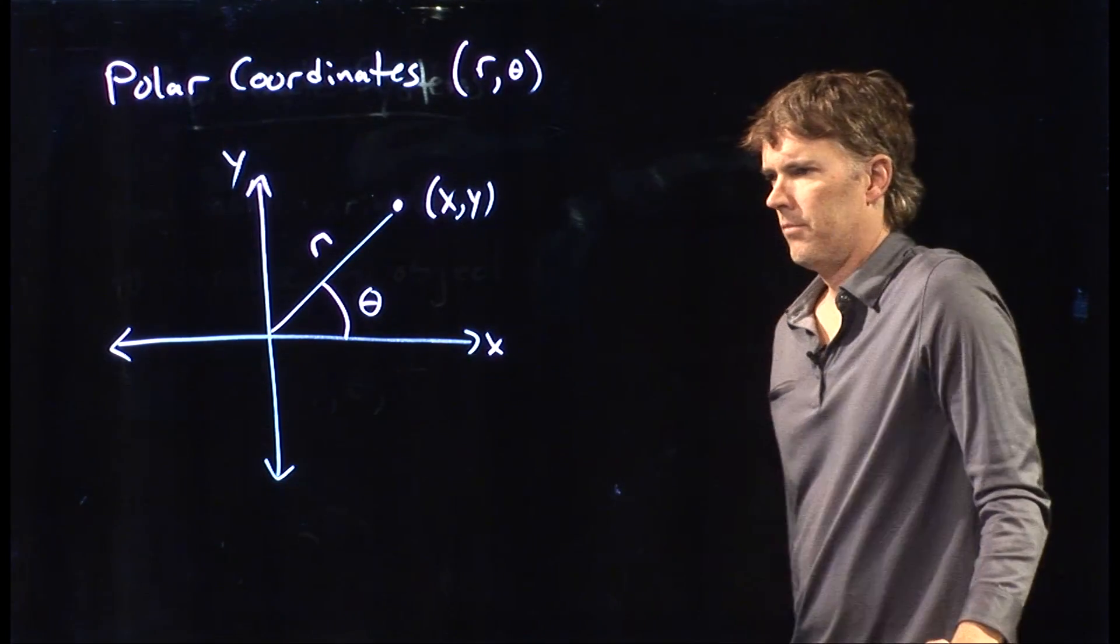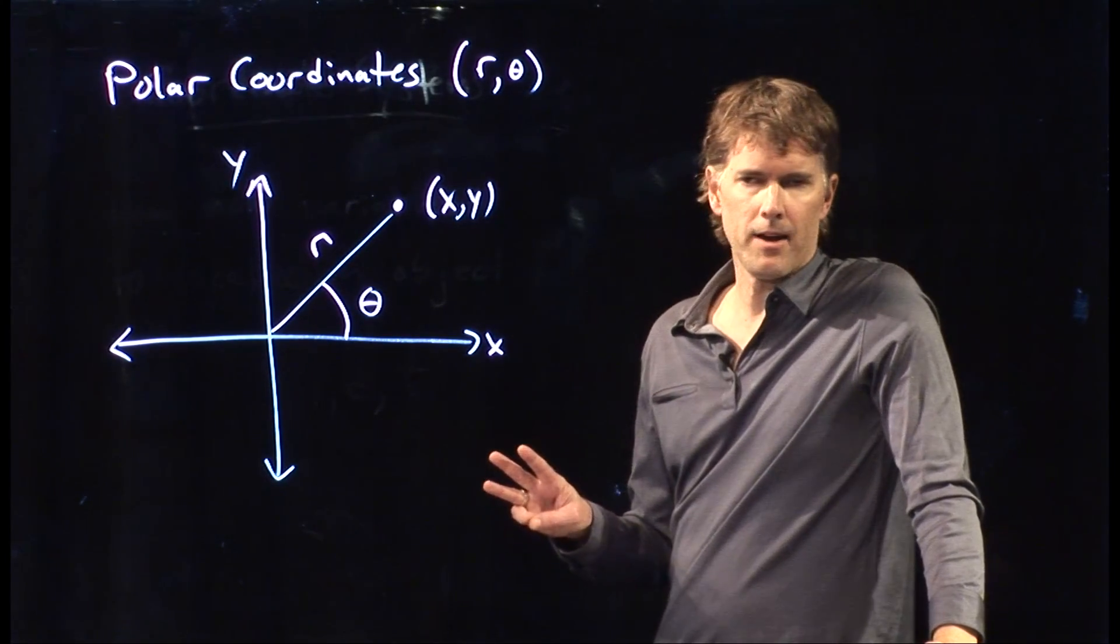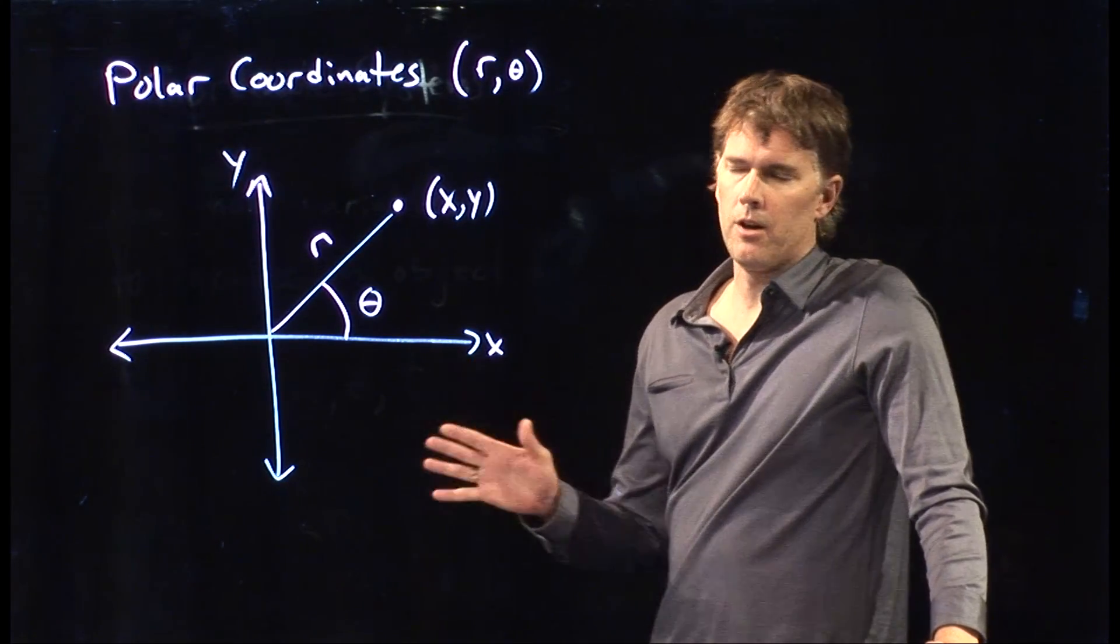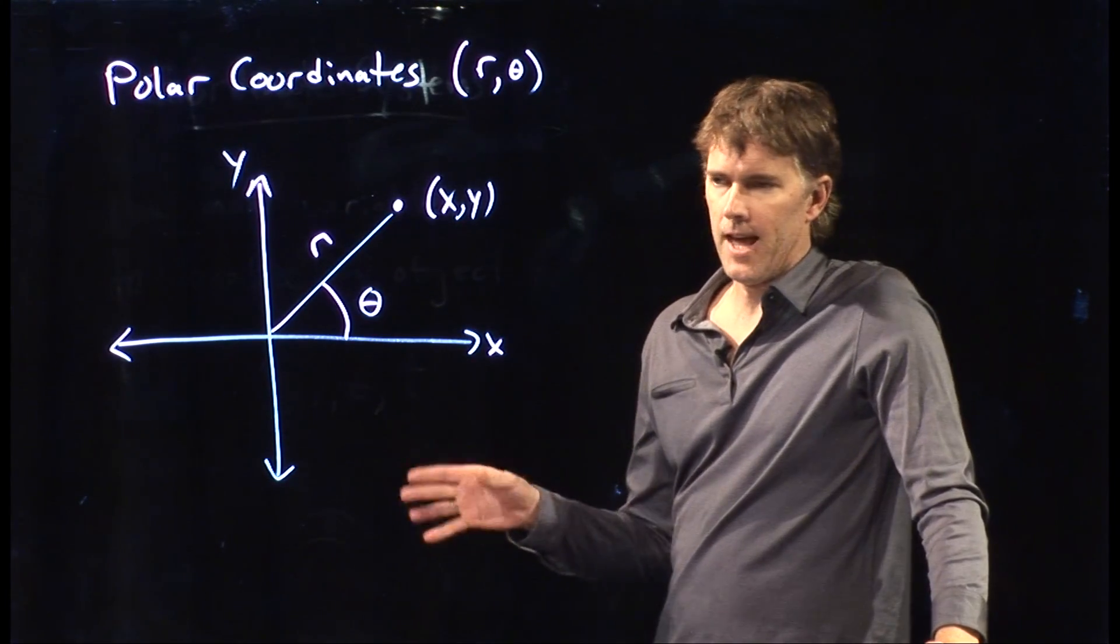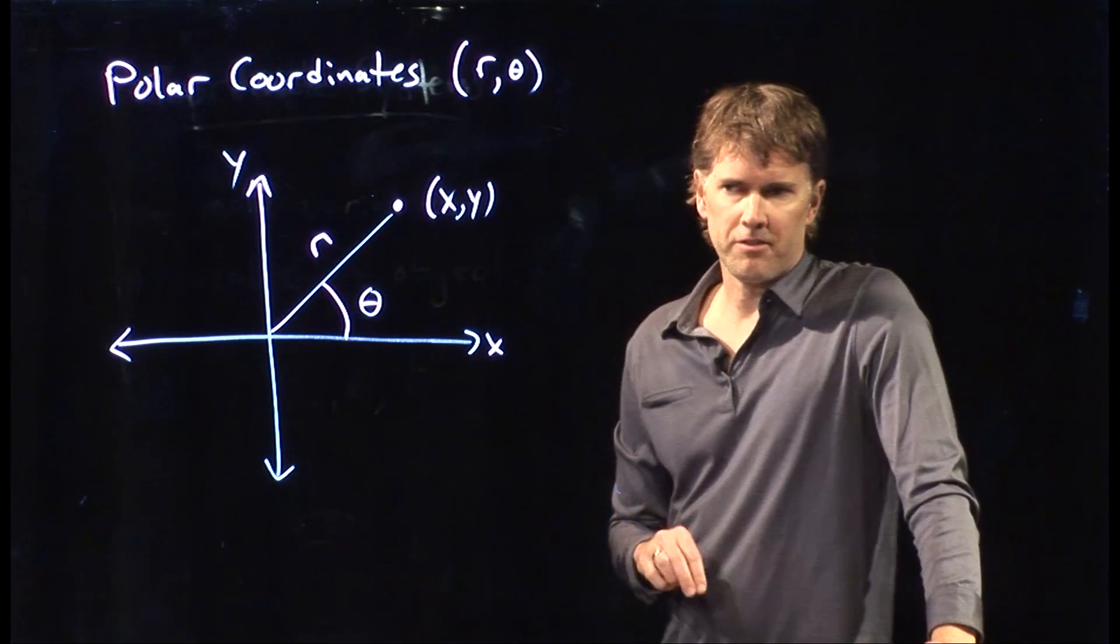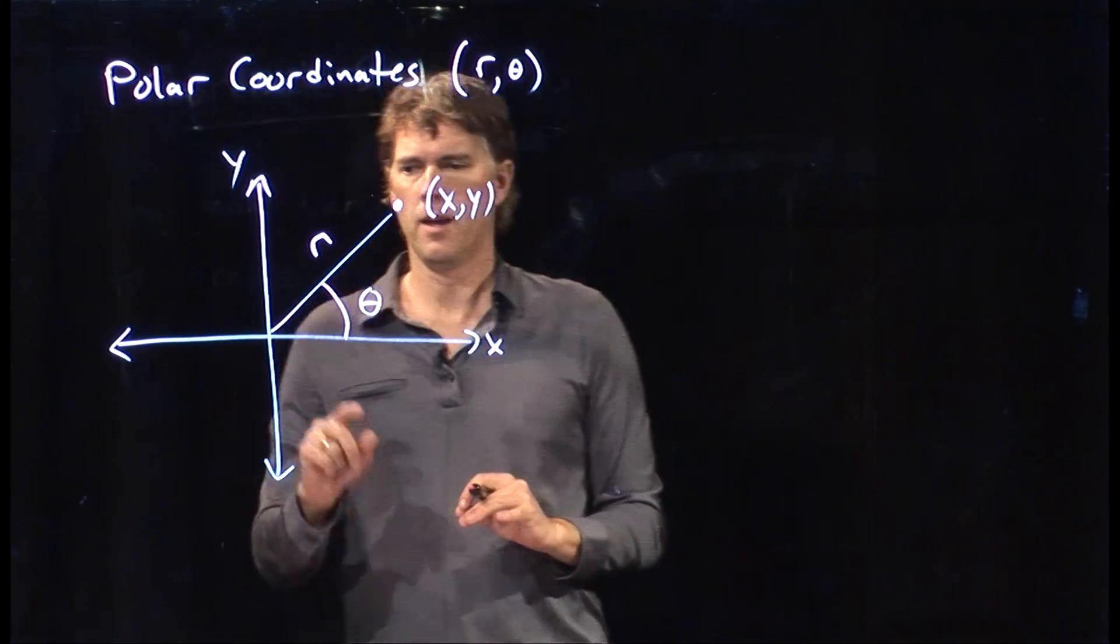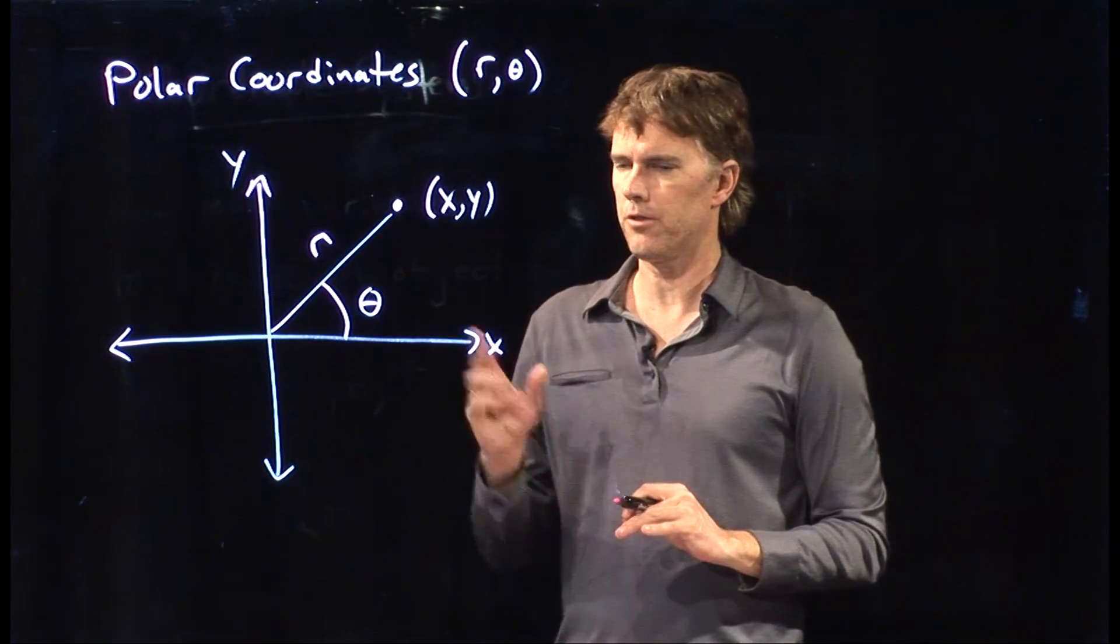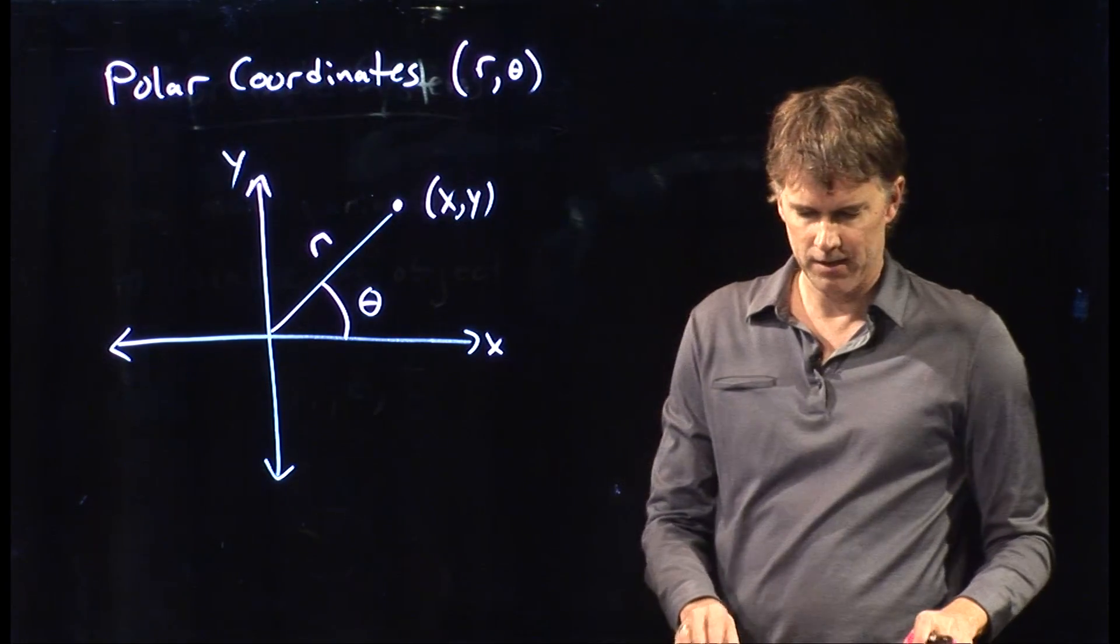To be technically correct, the three coordinate systems that you need to worry about as you go further in physics are the Cartesian coordinate system, cylindrical coordinate system, and spherical coordinate system. And this would correlate more towards the spherical coordinate system. But in two dimensions, we call it polar coordinates. How far are you from the origin? That's r. What's your angle relative to the x axis? That is theta.